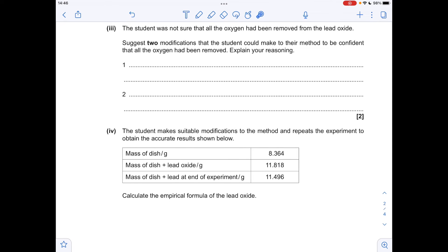Part three now, so two modifications the student could use to make sure that all of the oxygen has been removed. So the first one you could go for is heat till constant mass. Obviously, the mass is changing as the oxygen's been removed. Once that stops changing, all the oxygen's gone. Another one you could give is something along the lines of increasing the surface area of the lead oxide. So you could either break it up, make it into smaller pieces, or you could use powdered lead oxide.